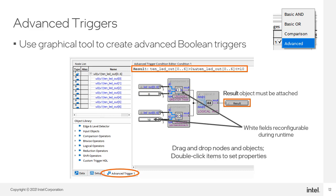The result equation at the top of the editor constantly updates to represent the expression defined by the objects placed in the window. Any signal or group of signals can be dragged out of the node list and dropped in the main window, but only trigger-enabled signals are listed. Objects such as comparison or logical operators can be dragged out of the object library list. Double-clicking an object lets you adjust settings specific to that object. Objects with a white background, such as the greater than, less than, and value objects, can have their settings adjusted during runtime without recompilation. Objects in the editor automatically connect together when placed near each other. Right-clicking empty space gives additional options such as zooming in and out, automatically cleaning up object placement, and centering objects in the display. The editor is very flexible and intuitive, making it easy to create complicated expressions.